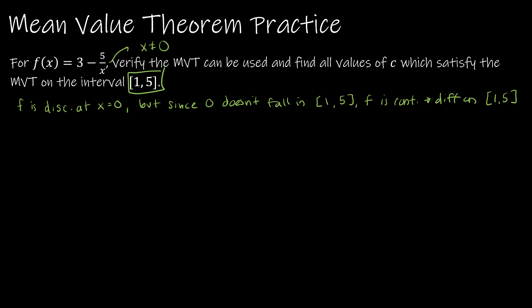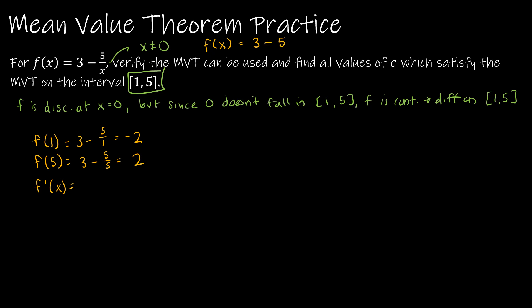Step 2 is find all the values of c. I'm going to find f(1), f(5), and f'(x). f(1) would be 3 minus 5 over 1, which is 3 minus 5, or negative 2. f(5) would be 3 minus 5 over 5, so 3 minus 1, which is 2. For f'(x), think of f(x) as 3 minus 5x to the negative 1. The derivative of negative 5x to the negative 1 is positive 5x to the negative 2, which is 5 over x squared.